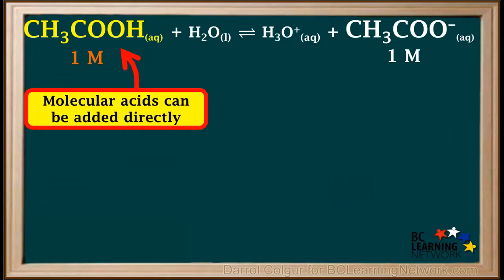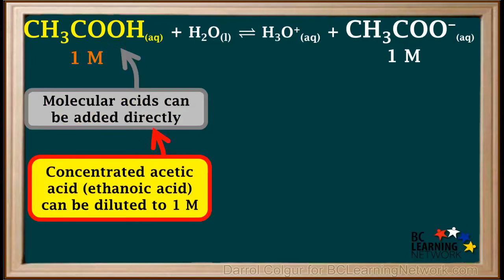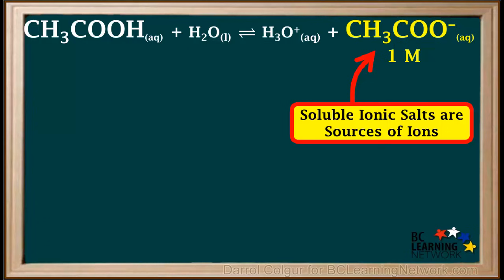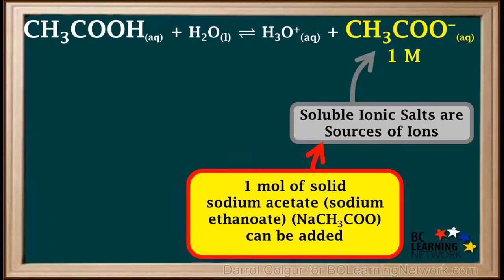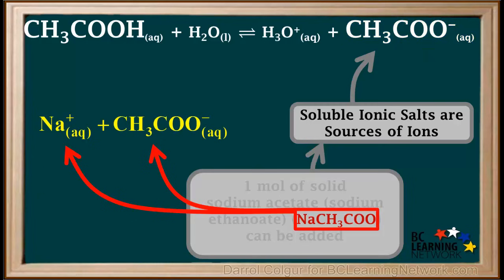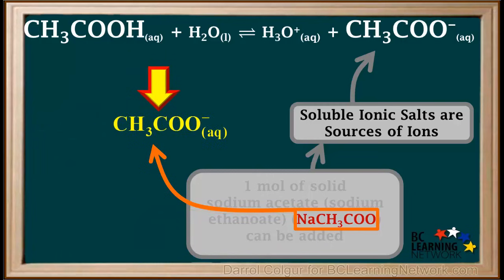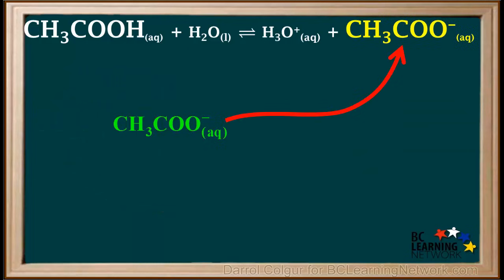To prepare a buffer solution, molecular acids can be added directly. To prepare the buffer in this example, concentrated acetic acid can be diluted to 1 molar. We can use soluble ionic salts as sources of ions in a buffer solution. To make this buffer, we could add 1 mole of solid sodium acetate to enough 1 molar acetic acid to make 1 liter of solution. The salt sodium acetate dissociates into sodium and acetate ions. The ion in the salt that's not part of the buffer is a spectator ion — in this case, the sodium ion — and we're left with the acetate ion, which is part of this buffer solution.